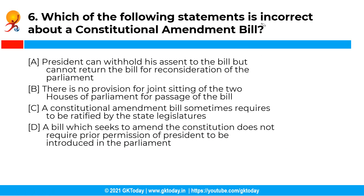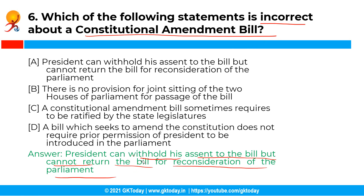The next question is: which of the following statements is incorrect about a constitutional amendment bill? The correct answer is option A — that the president can withhold his assent to the bill but cannot return the bill for reconsideration of the parliament. This statement is incorrect because the president can neither withhold his assent to the bill nor return the bill for reconsideration of the parliament. A constitutional amendment bill which seeks to amend the federal character of the constitution requires ratification by the state legislatures.